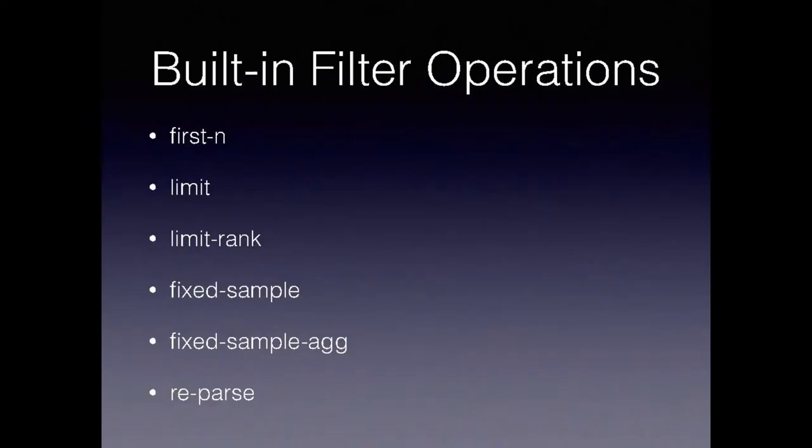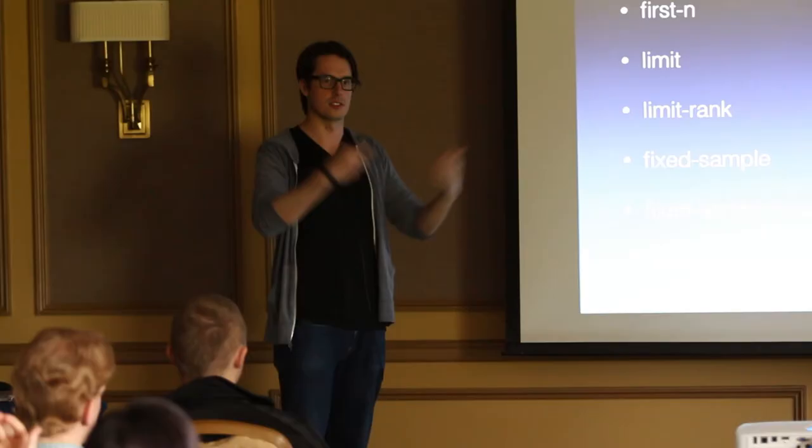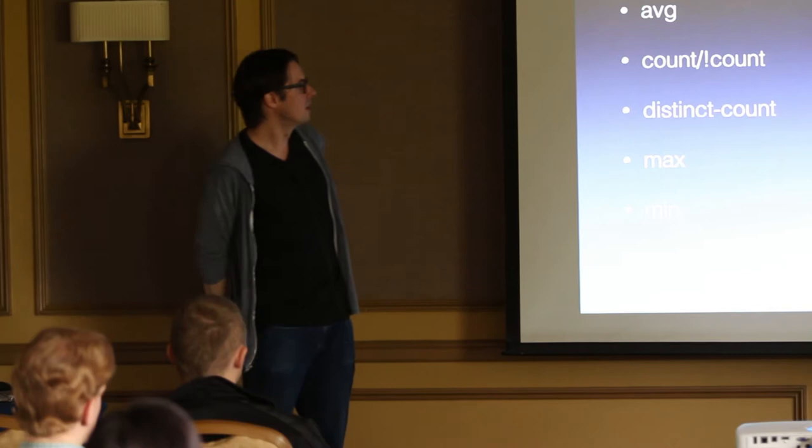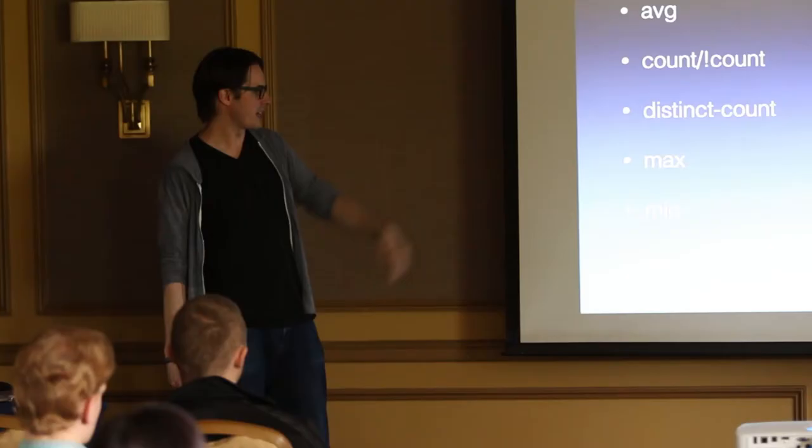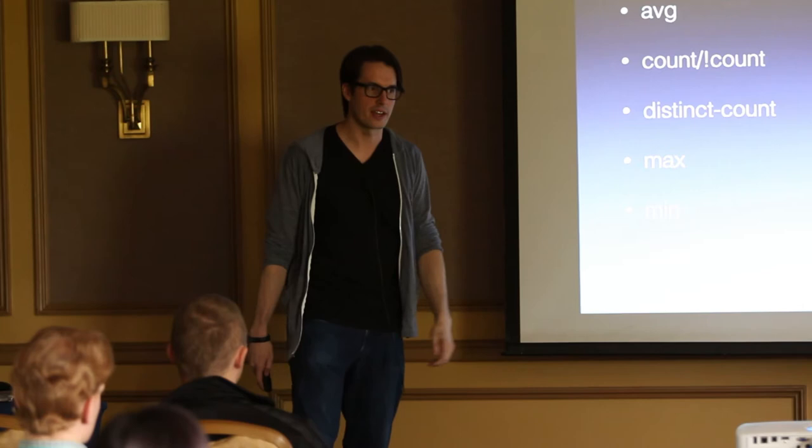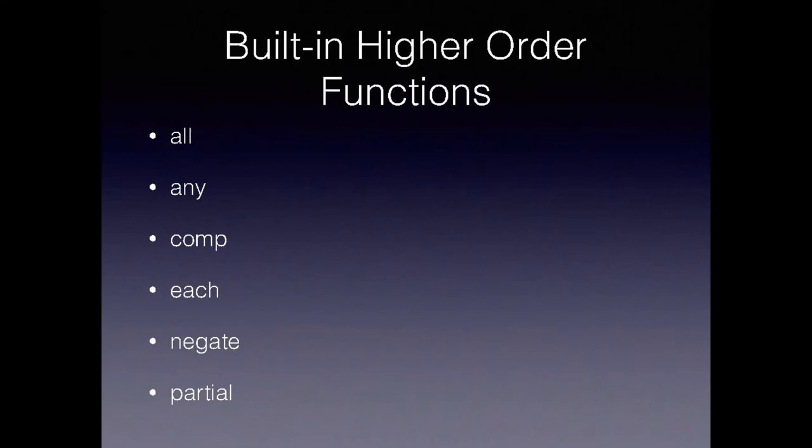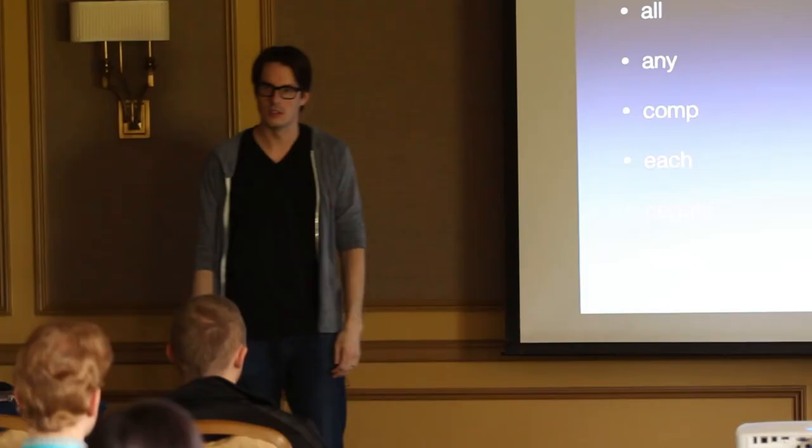Here's some Cascalog operations that we use. Built-in filter operations. You can have a limit, so you can have everything below a certain number. You can have fixed samples. You can reparse data. You can take the first n number of values out of something to remove peaks and spikes in data. There's a lot of aggregation averages. You can count things. You can count things with nulls or without nulls. You can have a distinct count for things. Maximum, minimum, sums. All the things you just sort of expect from a data processing framework. Higher order functions: any, all, each.